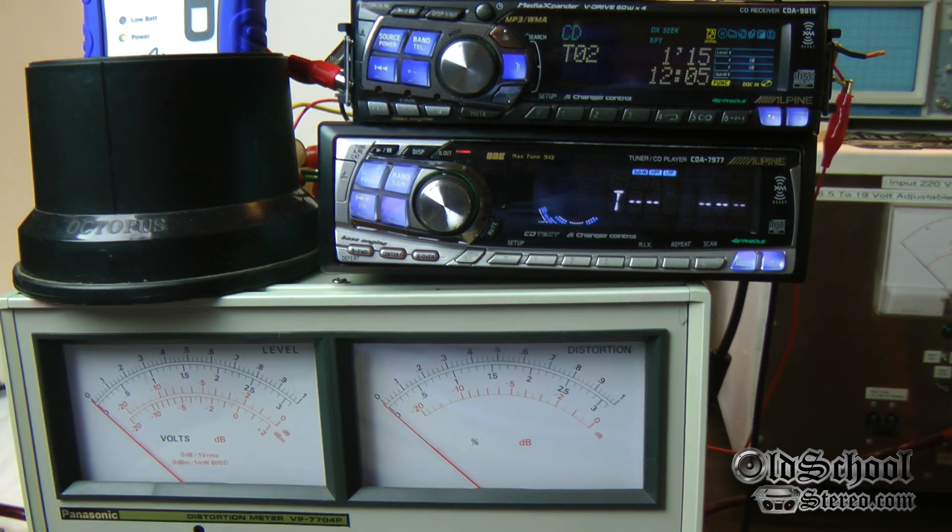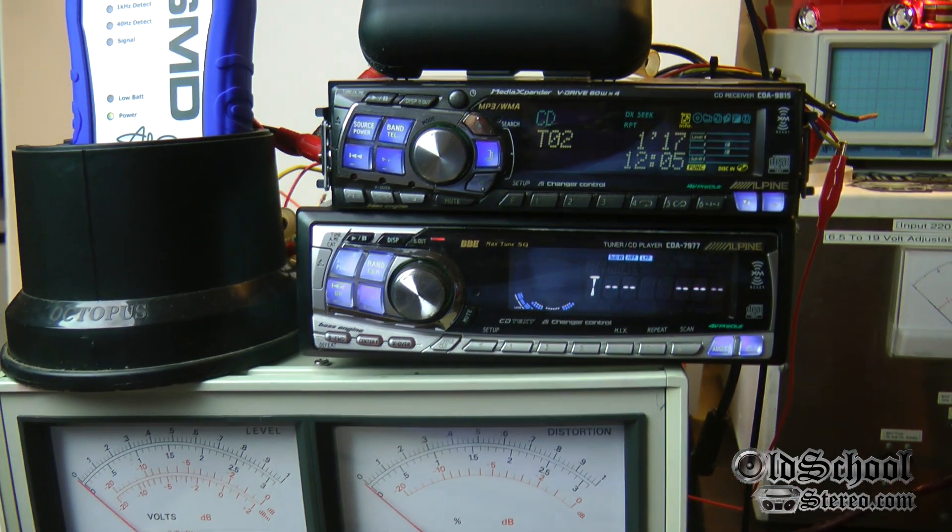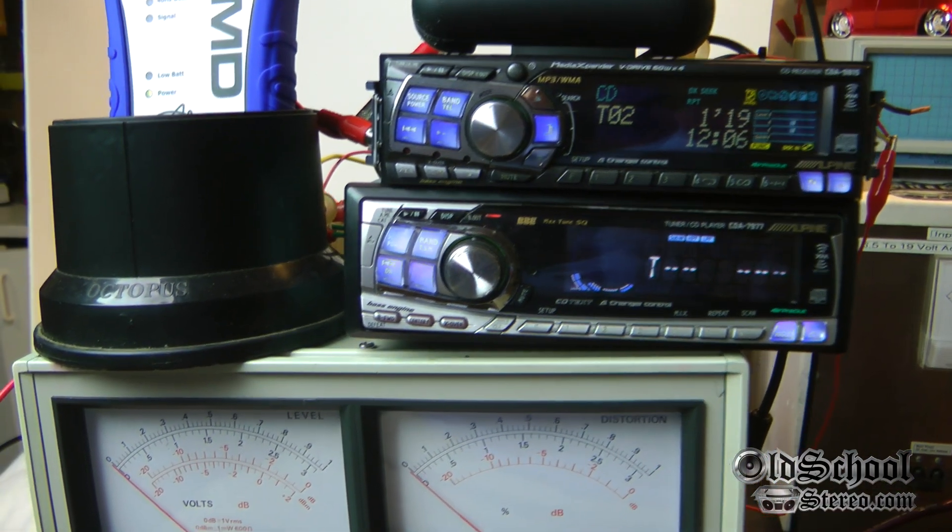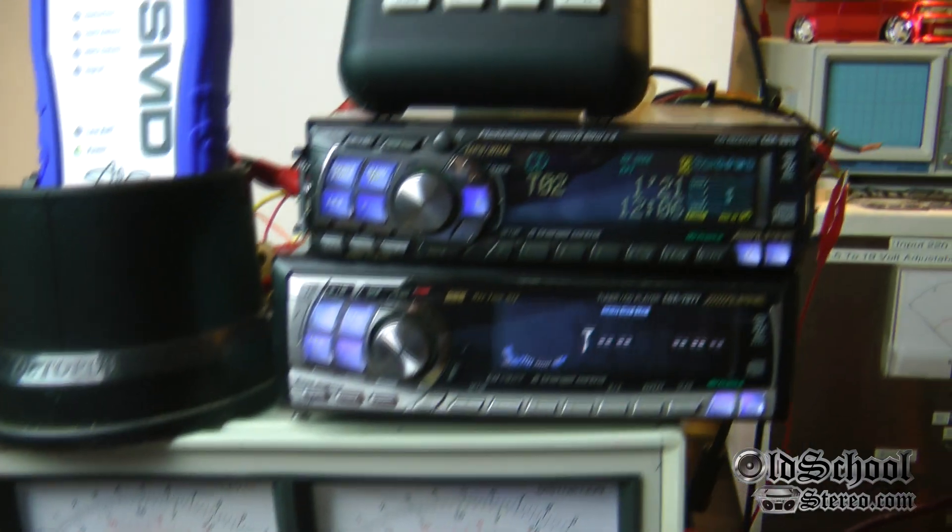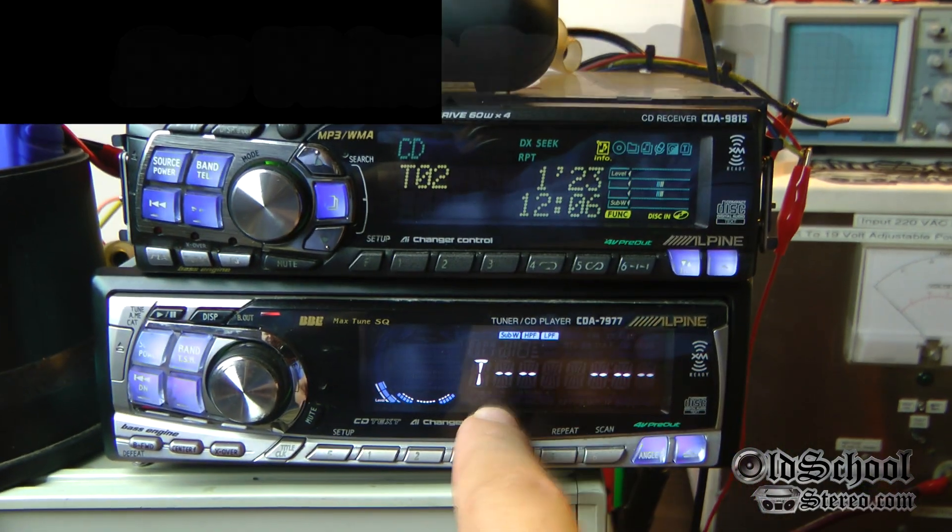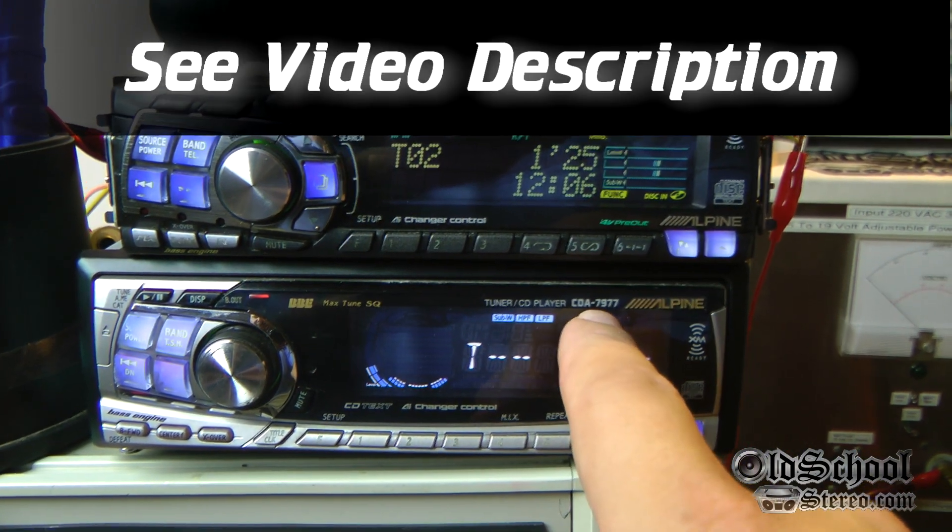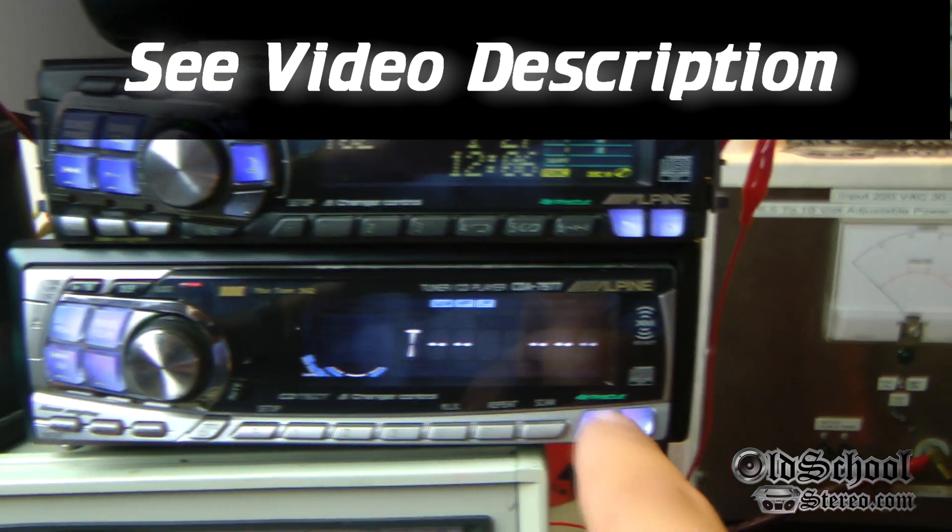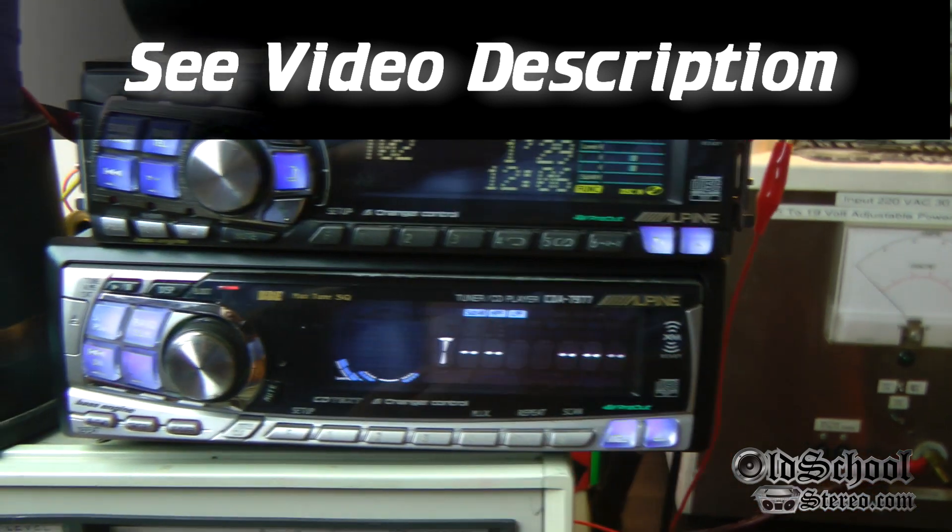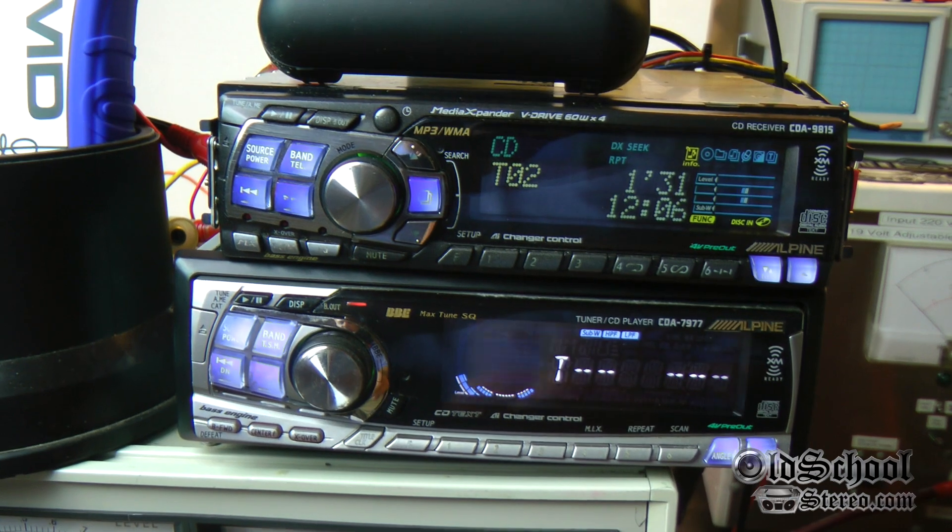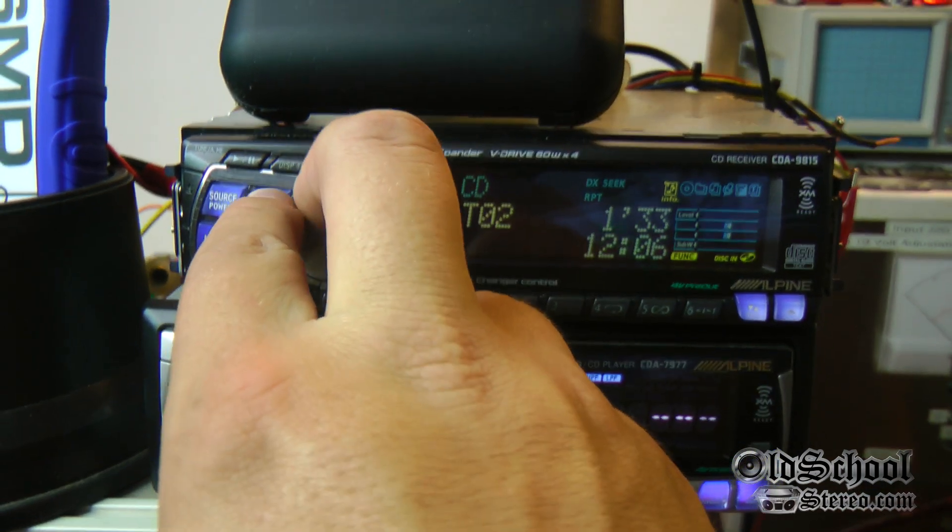We're going to test the distortion at one kilohertz and also test the voltage output to see what kind of voltage it puts out. You guys may have seen this video already with the CDA-7977. It said it had a four volt pre-out but actually had over five volts and distortion was very low. So let's check out the 9815.